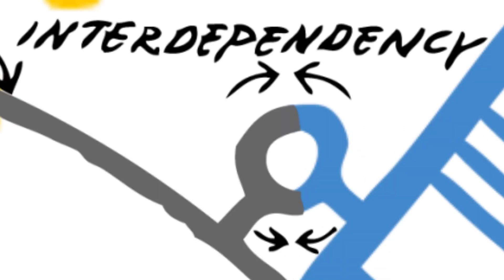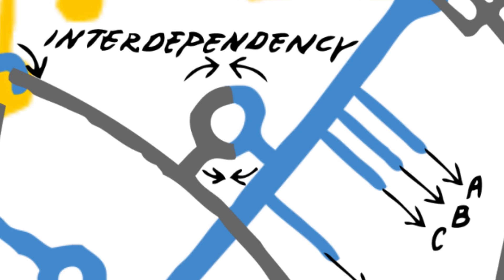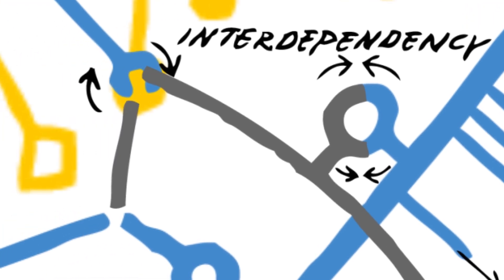This also shows that infrastructures become more and more interdependent. Transport depends not only on fuels but also on electricity. Electricity depends on ICT and vice versa.